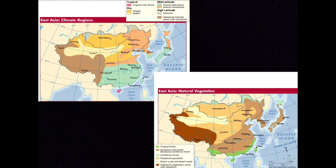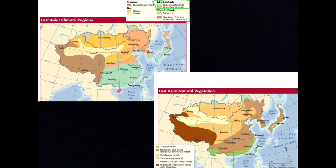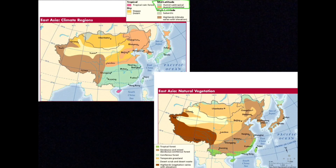The first type of climate region is the mid-latitude climates. On the map, those are shown in pewter green and a tannish color. They're mainly located in the southeastern sectors of East Asia — in Taiwan, parts of China, Korea, and Japan — where there is a humid subtropical climate with warm summers and heavy monsoon rains.